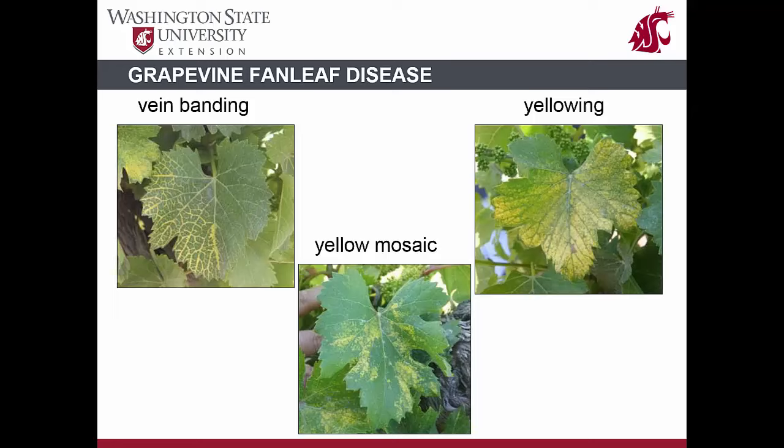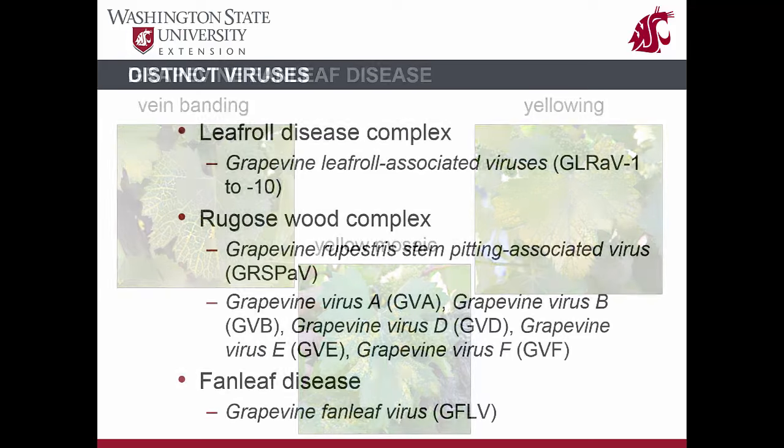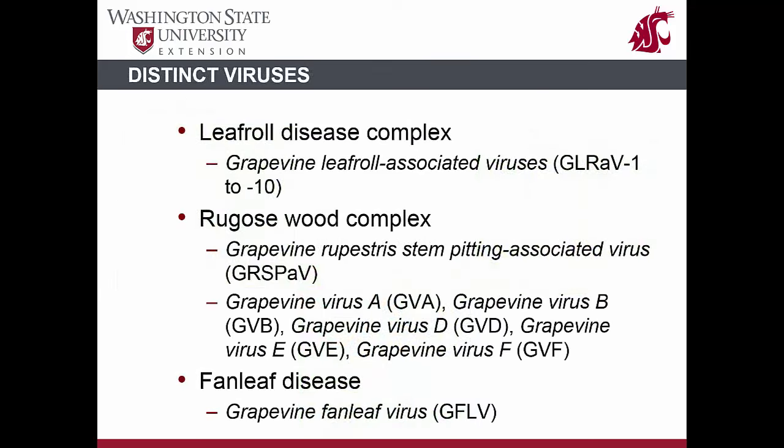All Vitis species and cultivars are susceptible to fan leaf disease. Generally, infected vines appear stunted and less vigorous than normal, and may show varying severities of leaf and cane malformation. Leaves of an infected vine show a range of symptoms including vein banding, yellowing, and yellow mosaic symptoms. Fruit quality and yield can be reduced significantly.